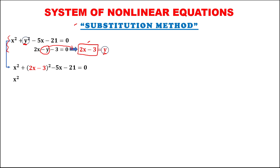Then, to simplify, we need to expand the square of the binomial using the SMS method. S — the square of the first term: the square of 2x is 4x squared. Then M — multiplication: multiply these three numbers, 2 times negative 3 is negative 6, times 2x, giving us negative 12x. Then the last S — the square of the last term: the square of 3 is 9.